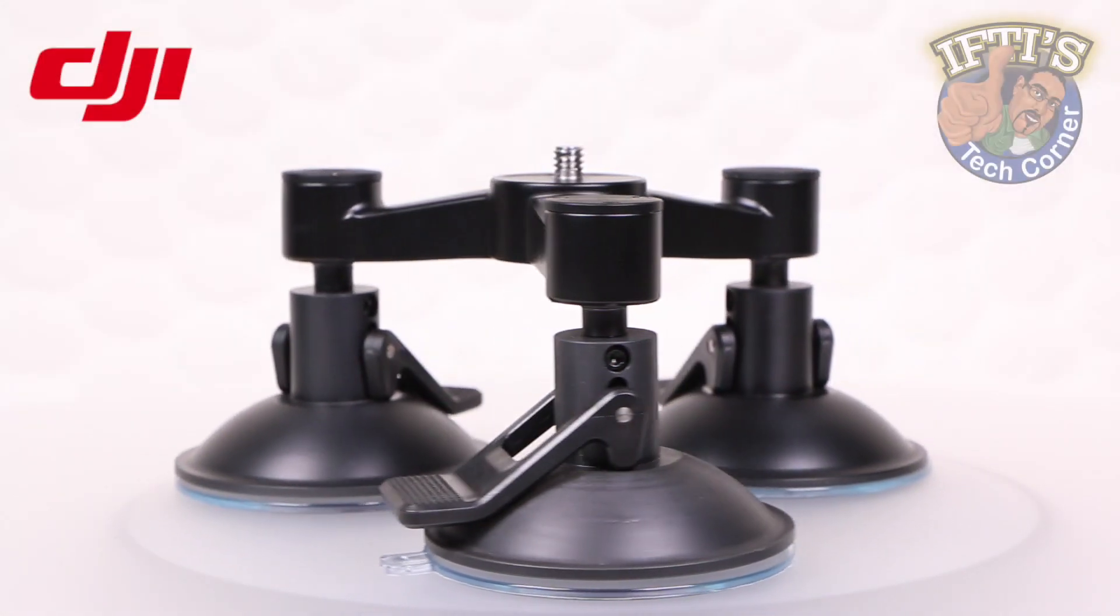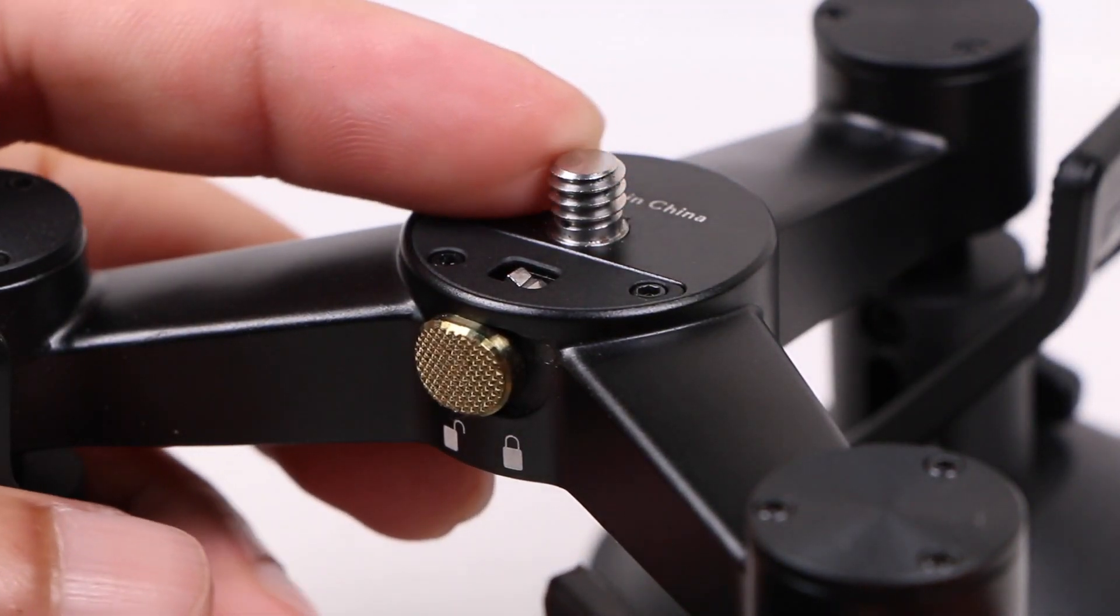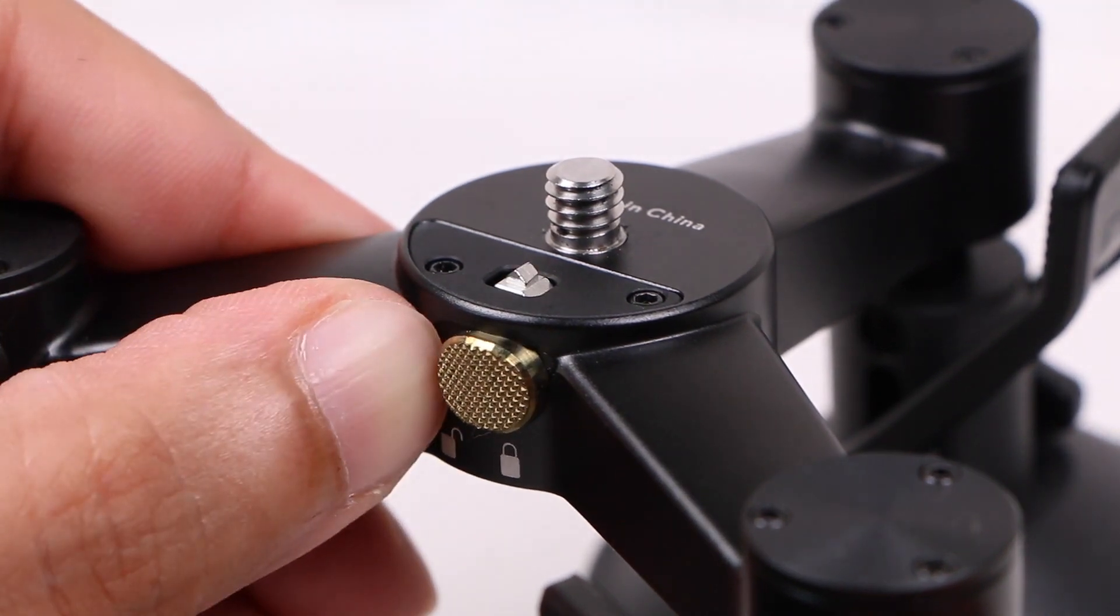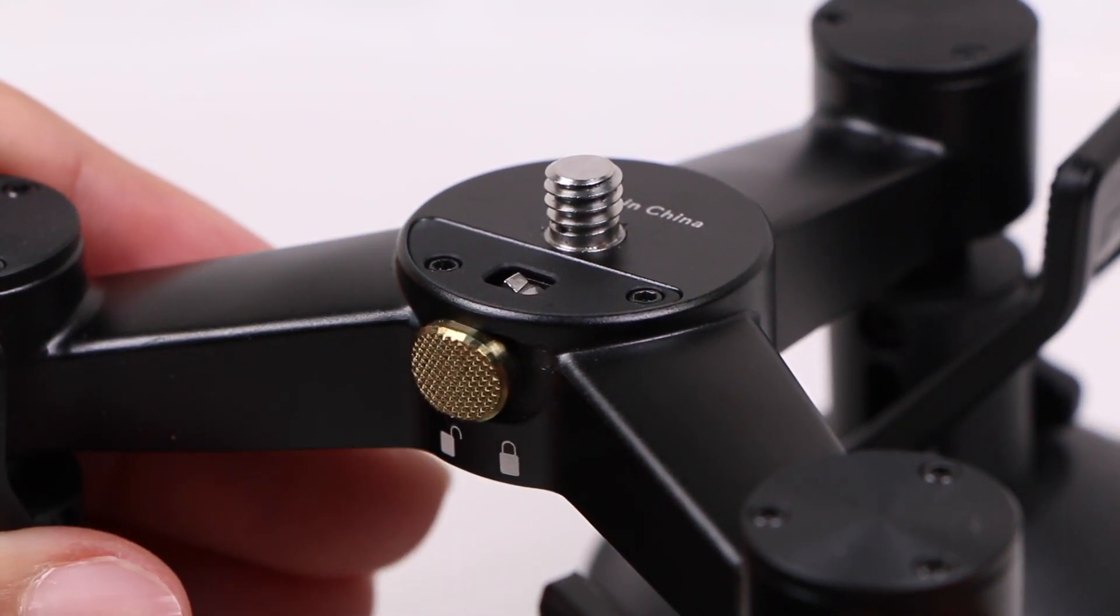A threaded bolt at the top of the mount finishes off the design, alongside a small locking switch, which helps lock the adjustable arm into place once attached.